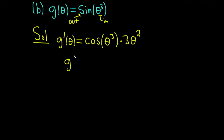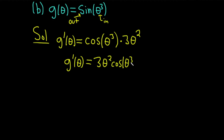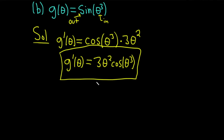So g prime of theta — let's put the 3 theta squared in front of the cosine for clarity. The g prime of theta will be equal to 3 theta squared times the cosine of theta cubed.